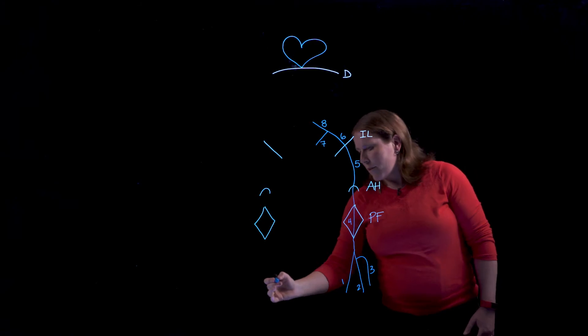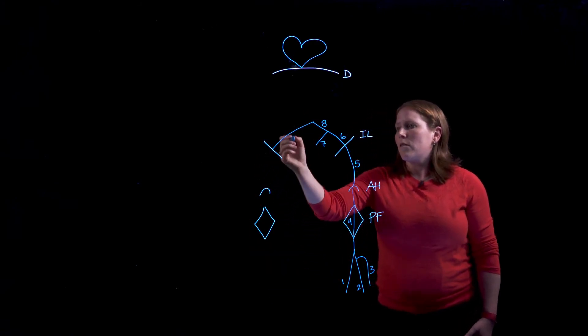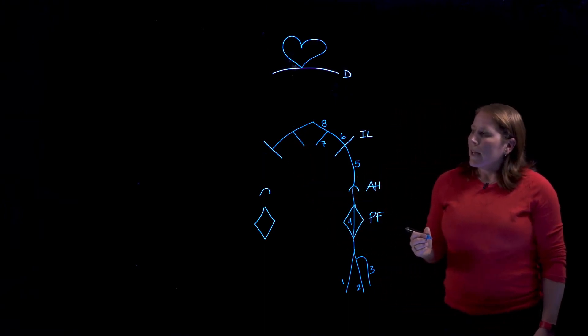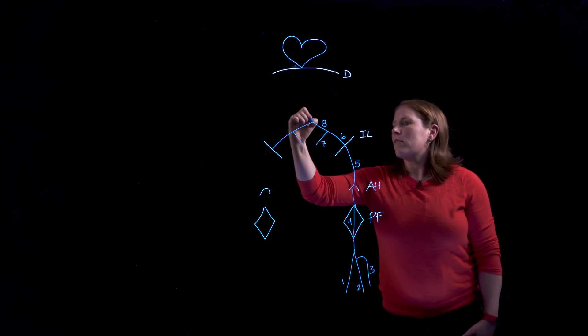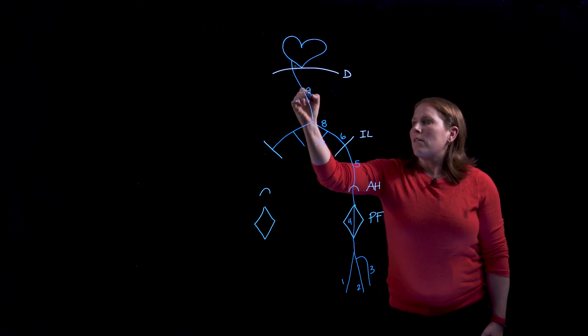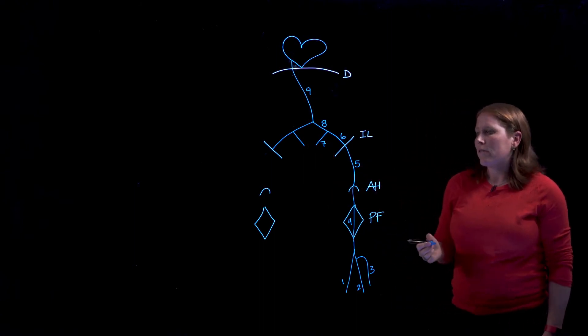The exact same thing is going to happen on the right hand side. Your two common iliac veins unite and they form the large vein in the abdomen that eventually drains into the heart and this is the inferior vena cava.